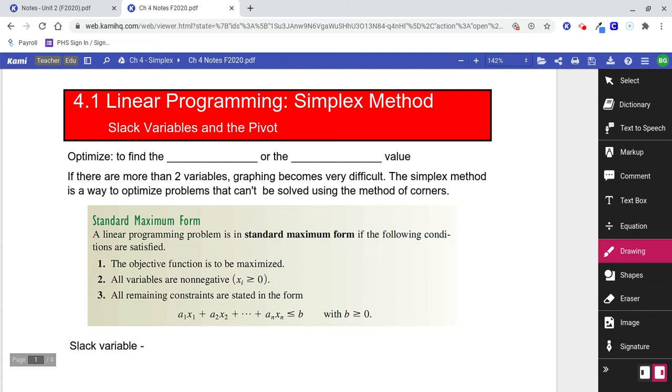We learned in Chapter 3 that to optimize meant to find the maximum or the minimum. But Chapter 3 was very limited because it was graphing, and we only know how to graph in two-dimensional space. That's why we only used variables x and y. There's going to be an issue if we have more than two variables. If we have three or more variables, we're not going to be able to graph it.